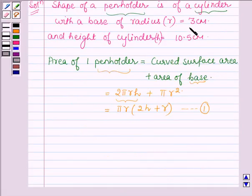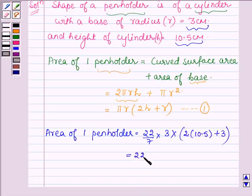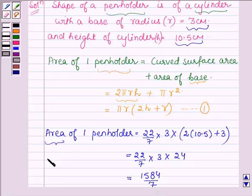Now substituting the values of r and h to get the area of one pen holder. We have 22/7 × 3 × (2 × 10.5 + 3), which equals 22/7 × 3 × 24, which further equals 1584/7 cm². Since the radius and height are given in centimeters, area is in centimeters square.